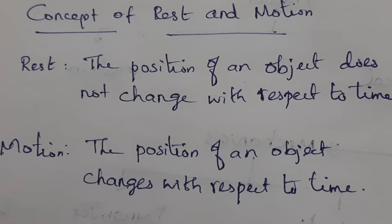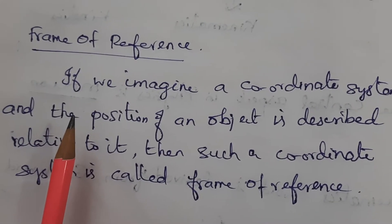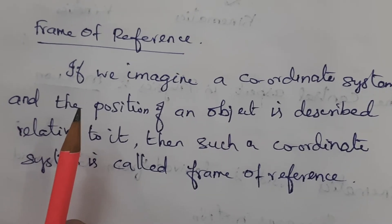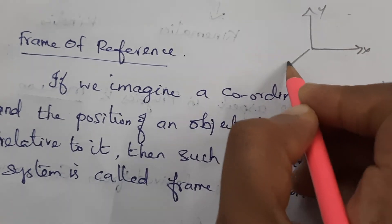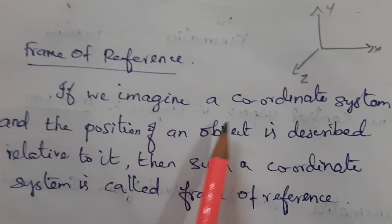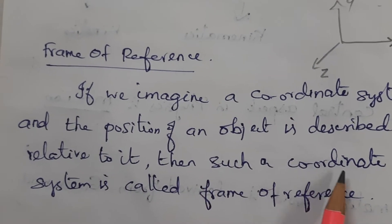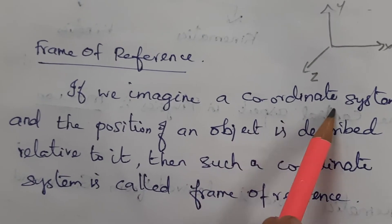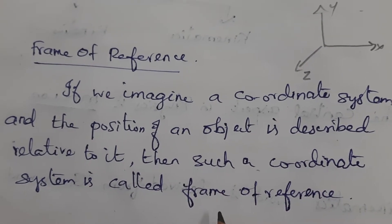What is meant by frame of reference? In mathematics, we call it a coordinate system; in physics, we call it a frame of reference — just the x, y, and z axes. If we imagine a coordinate system and the position of an object is described relative to it, then such a coordinate system is called a frame of reference.